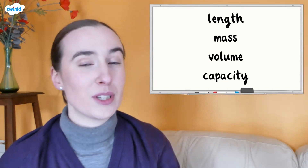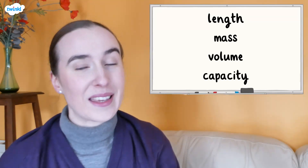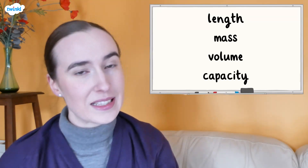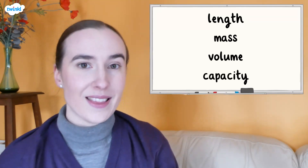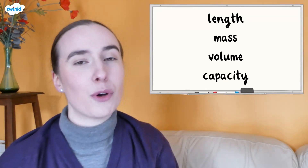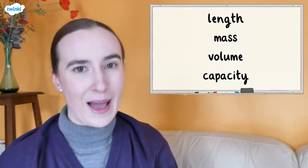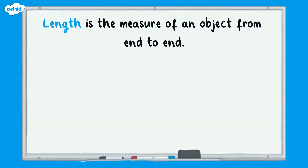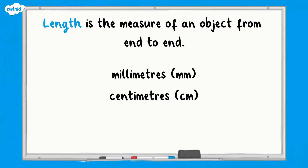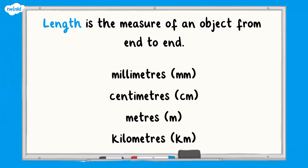It's important to remember the key differences between length, mass, volume, and capacity. Length is the measure of an object from end to end and can be measured in millimetres, centimetres, metres, or kilometres.